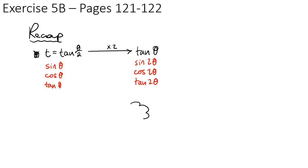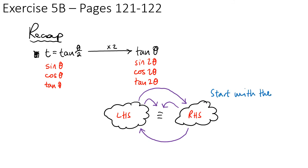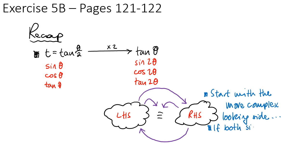When proving identities, remember: you can start with one side and work to the other, or try to get both sides to meet in the middle. My advice is to start with the more complex looking side — and that's after you've written everything in terms of t. If both sides look about the same complexity, then start with both sides and move to the middle.